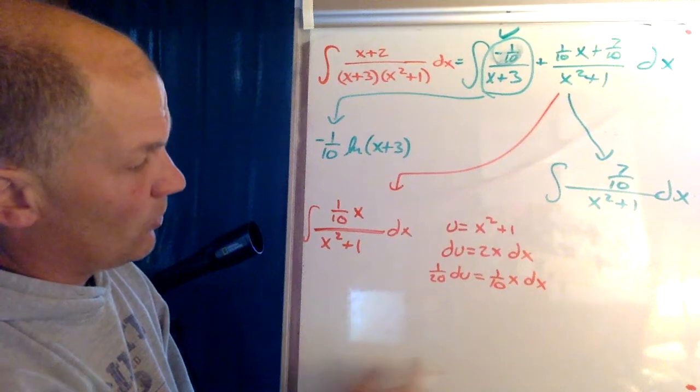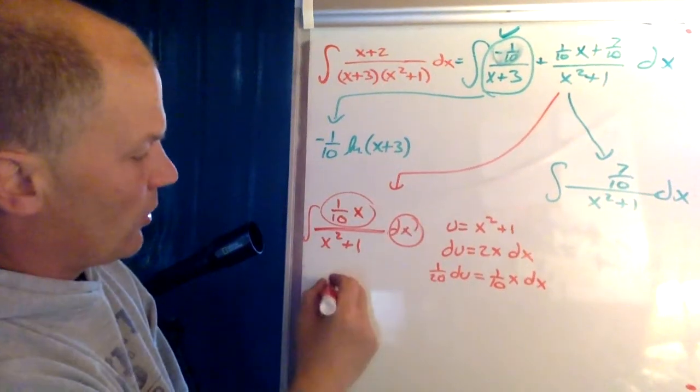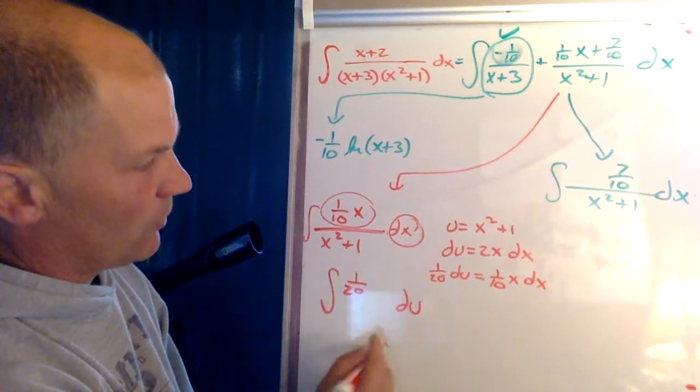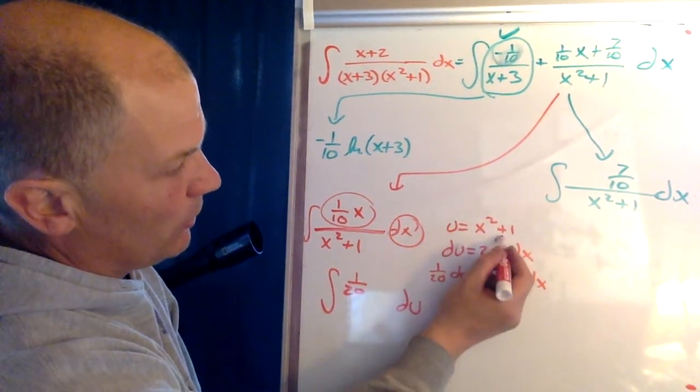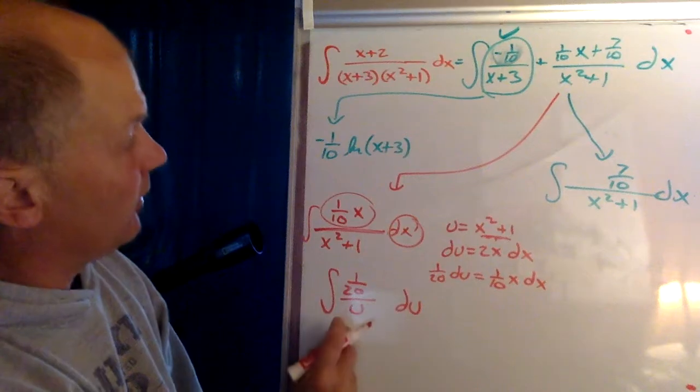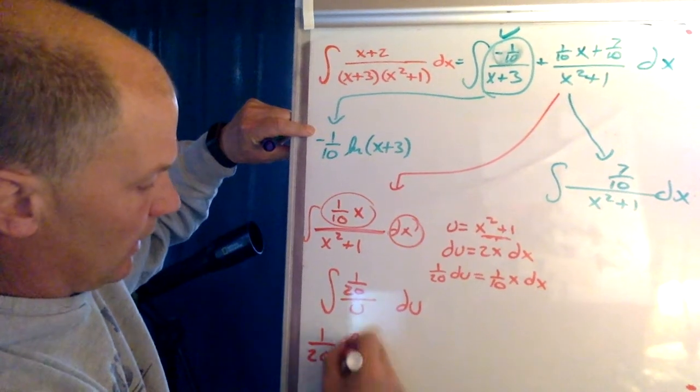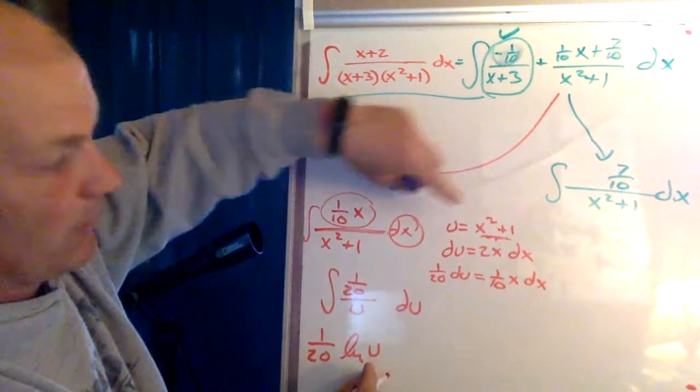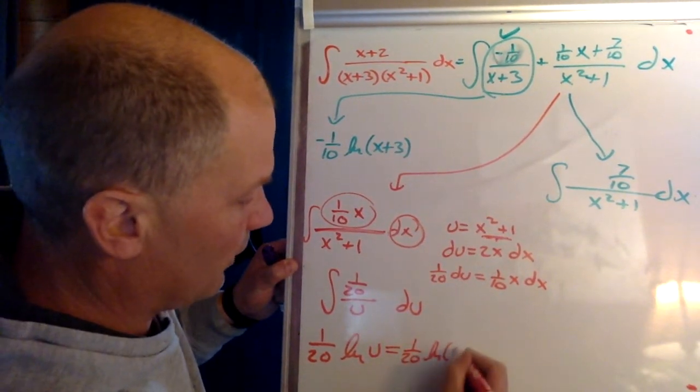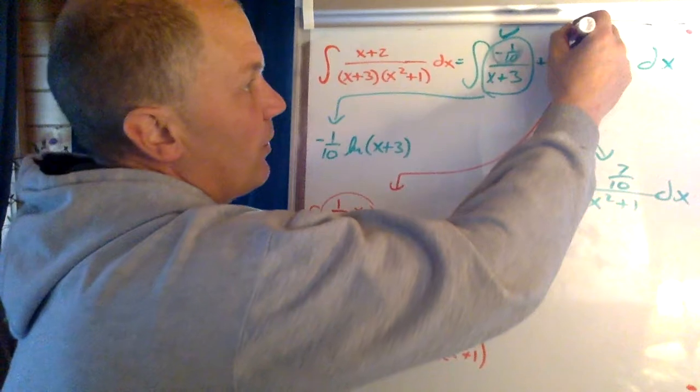So now I could do my substitution. So I know when one twentieth du is going to take care of this and this. So I now rewrite it and I go one twentieth du, take care of those two, and I'm going to divide by u because this is my x squared plus one. So I end up with that. And this is now very much like this. So the integral of this is one twentieth the ln of u, which then we have to substitute back in. So we say that that's really one twentieth the ln of x squared plus one. Okay, so now I have taken care of that part of it.